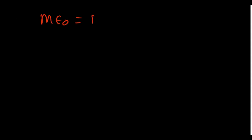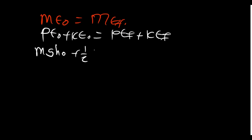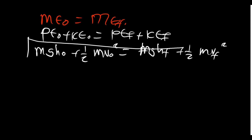When talking about conservation of energy, remember that energy cannot be created or destroyed, but it can be transformed from one state to another. The general formula is: mechanical energy initial equals mechanical energy final, which means MGH_initial plus half MV_initial squared equals MGH_final plus half MV_final squared.